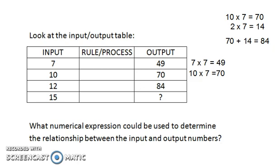So 12 times 7 equals 84. What numerical expression could be used to determine the relationship between the input and output numbers? We know the rule is times 7.